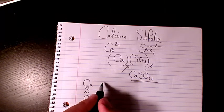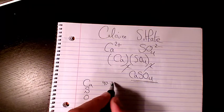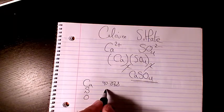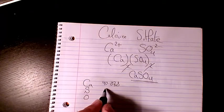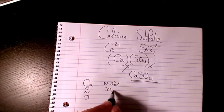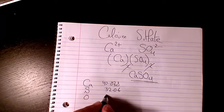Therefore we have calcium, we have sulfur, and we have oxygen. Calcium is 40.078, sulfur is 32.06, and oxygen is 15.999.